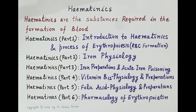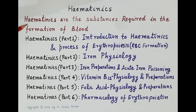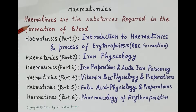Hello students. The topic we are going to discuss is hematinics. Hematinics are the substances required in the formation of blood. The most important substances required in the formation of blood are iron, vitamin B12, folic acid, and erythropoietin.